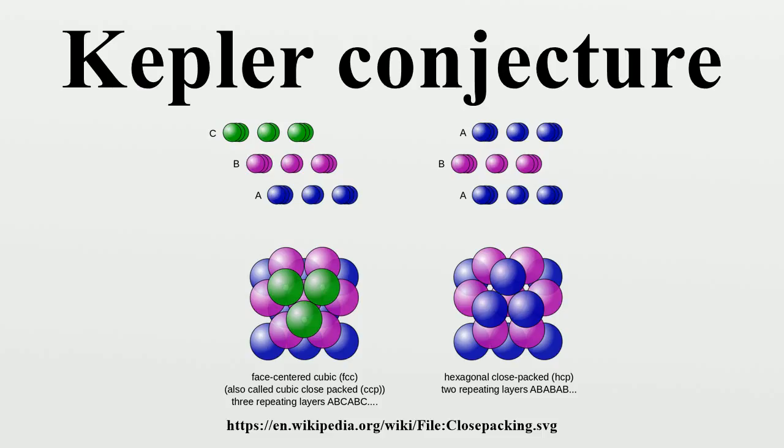Imagine filling a large container with small equal-sized spheres. The density of the arrangement is equal to the collective volume of the spheres divided by the volume of the container. To maximize the number of spheres in the container means to create an arrangement with the highest possible density, so that the spheres are packed together as closely as possible. The experiment shows that dropping the spheres in randomly will achieve a density of around 65%.